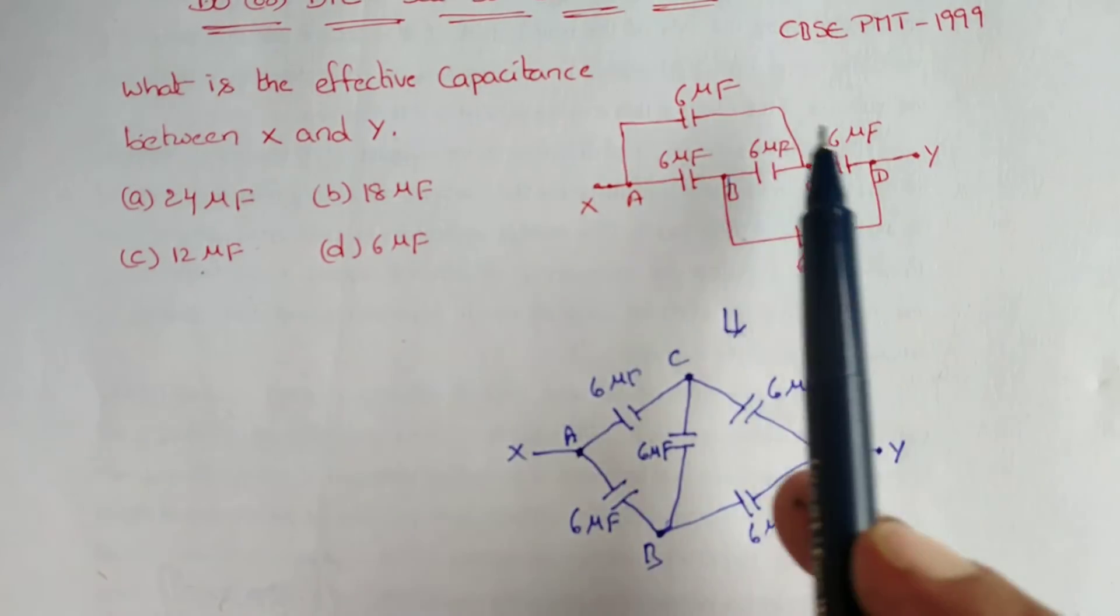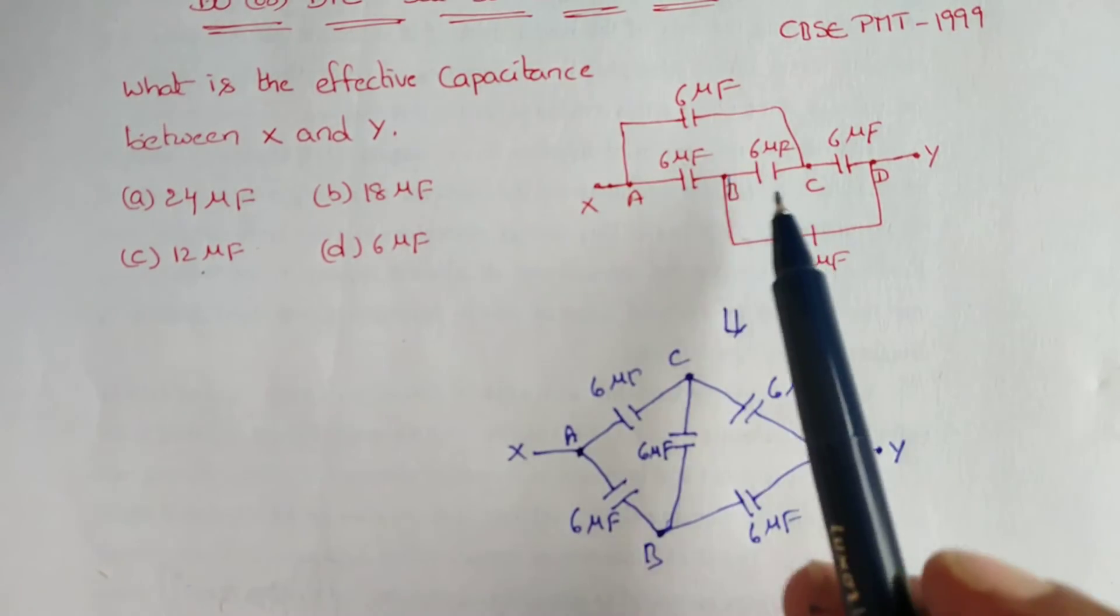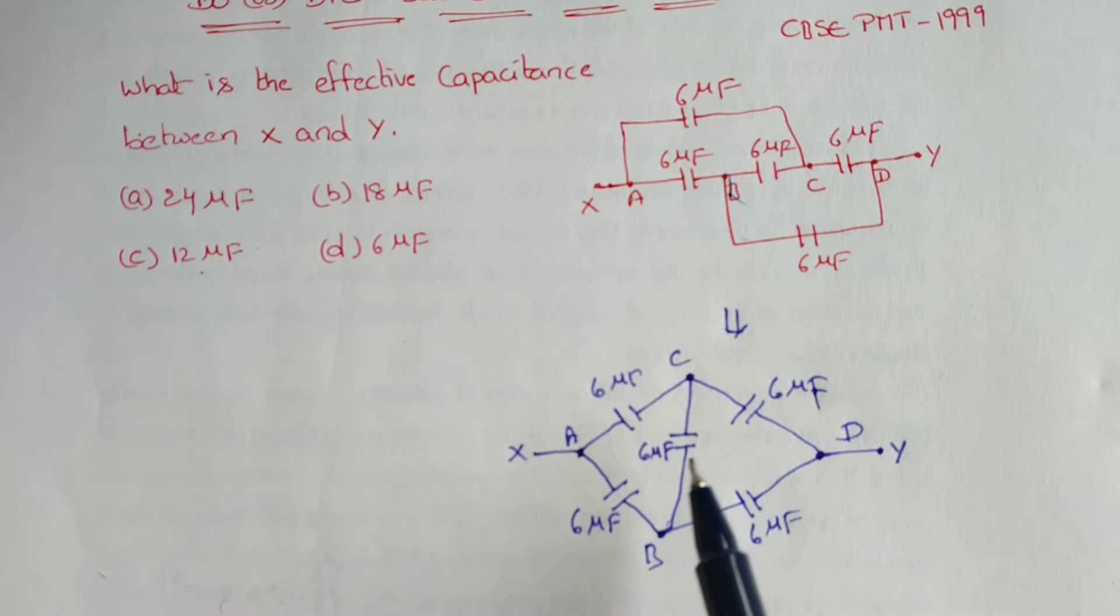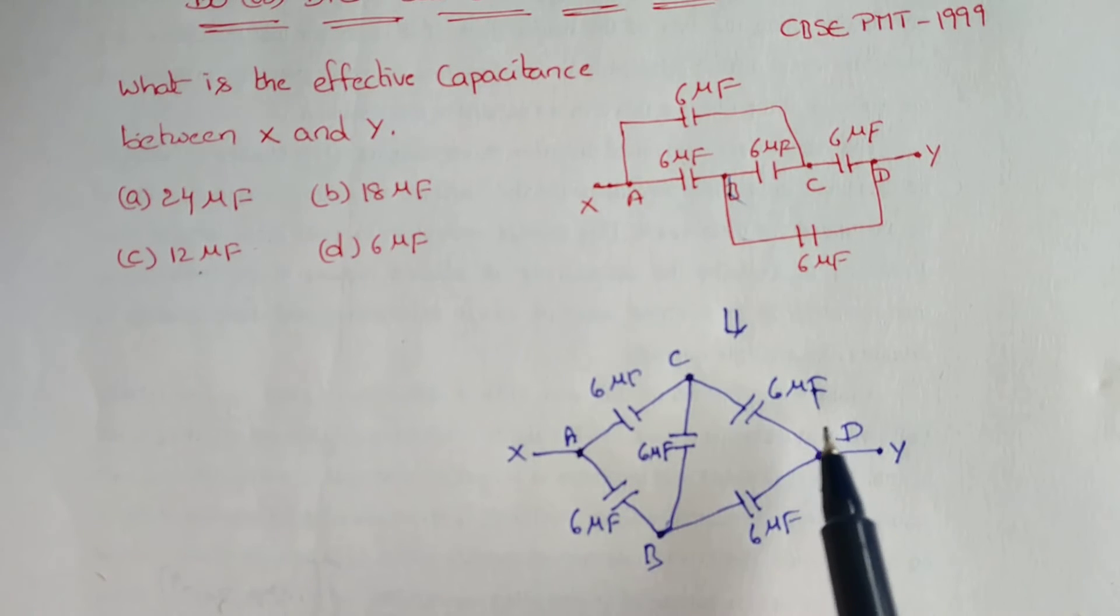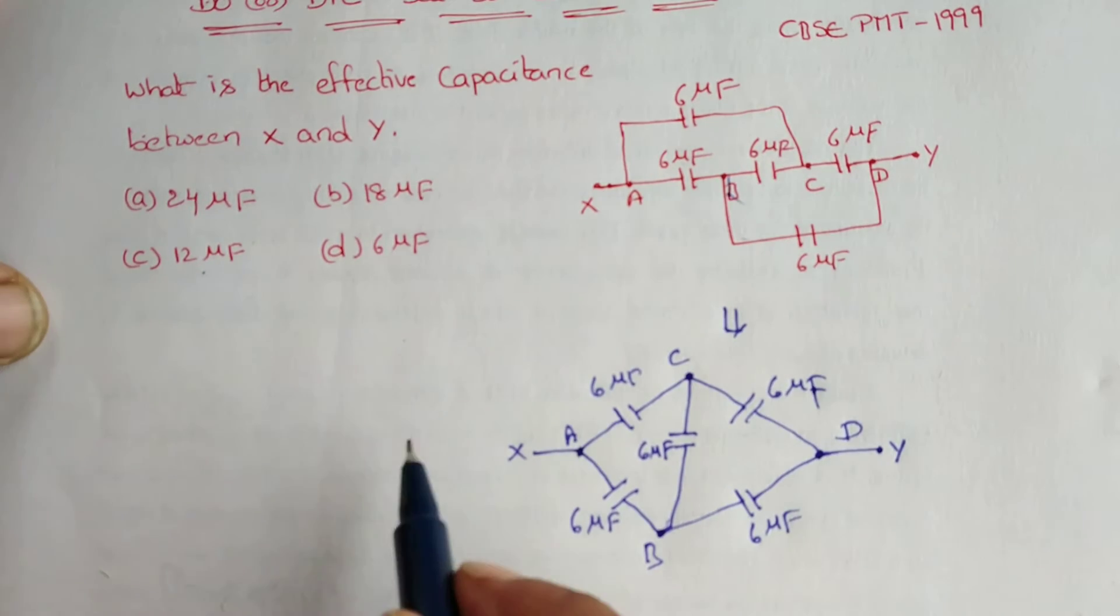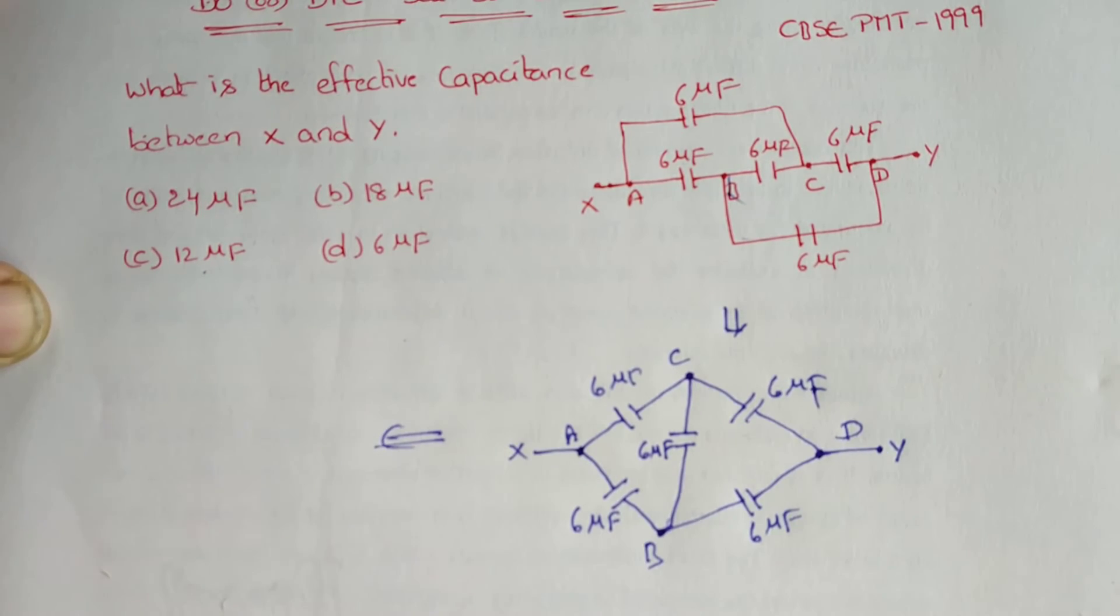If any circuit diagram is like this, then definitely it is in the form of a Wheatstone bridge. Then it is a form of a bridge circuit. Now we can apply the condition for the Wheatstone bridge.